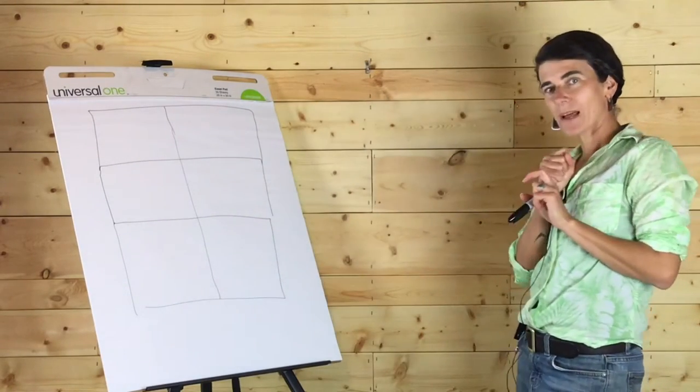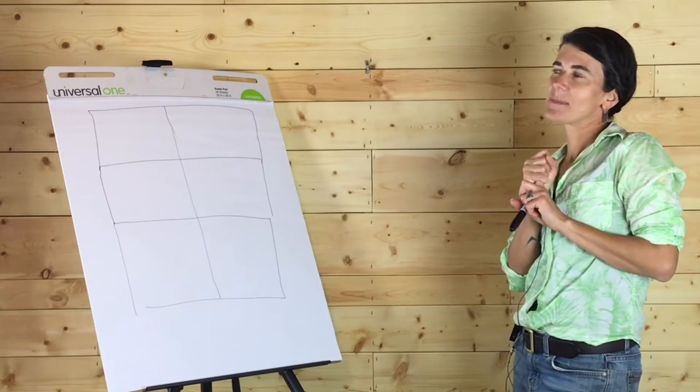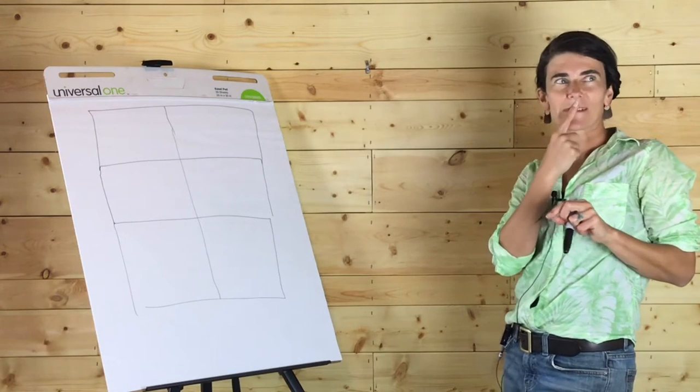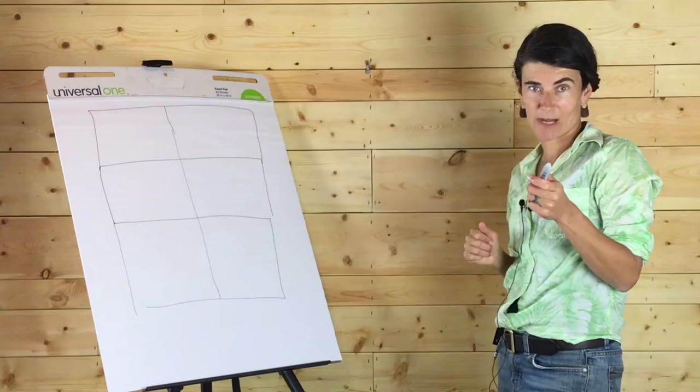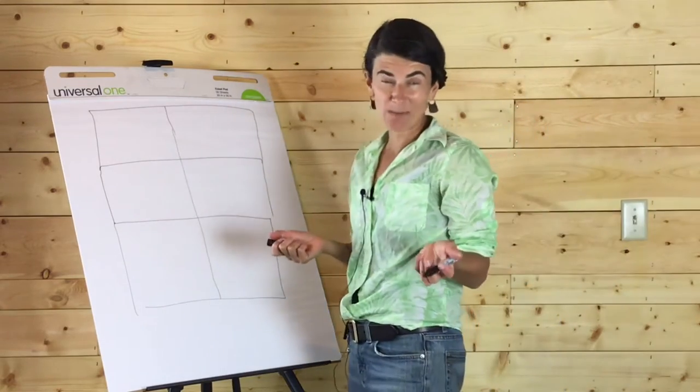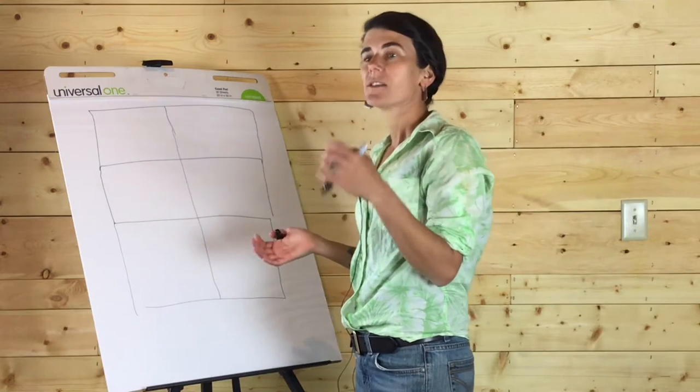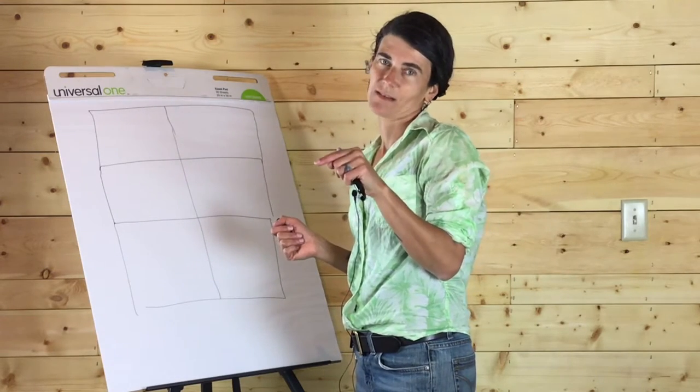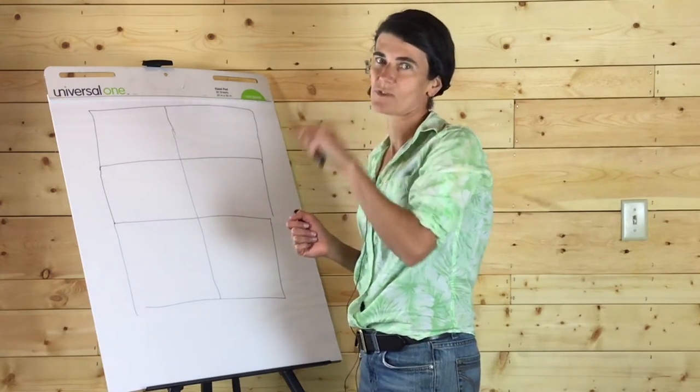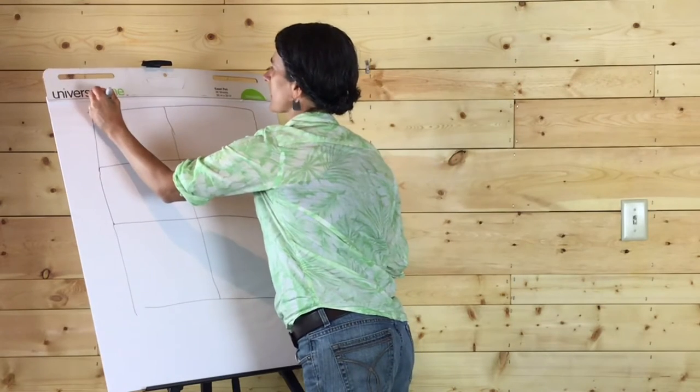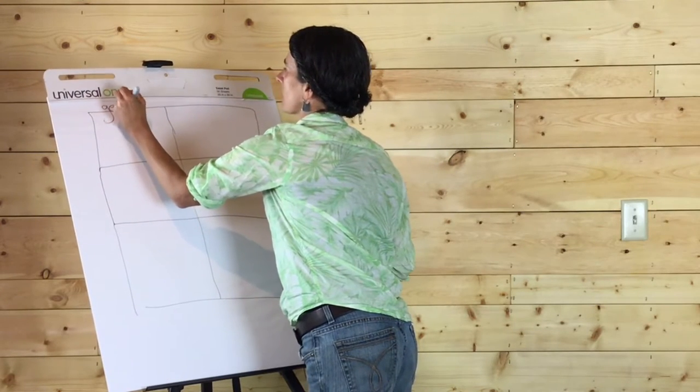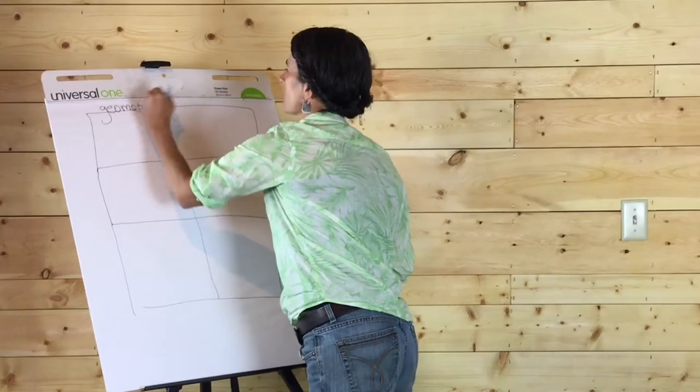So the first one is going to be, let's see, how about geometry? And along the way, we're going to label these so that later, when you're doing a project like this on your own, you have a little reminder, and you can say, what was that other box? Oh, geometry. So I'm just going to write it in up here for my own memory. Geometry.